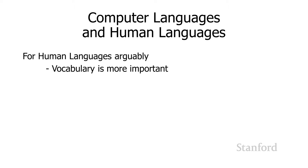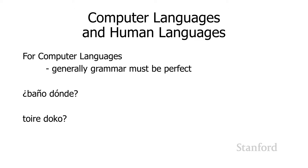For human languages, vocabulary is arguably more important. If I'm stuck somewhere and don't speak Spanish and say a few words, people will figure out what I'm trying to say. My grammar may be off, but people will still help. Unfortunately, for computer languages, the grammar must be perfect. That's less true for HTML, but for cascading style sheets and especially programming languages, your grammar absolutely has to be perfect.